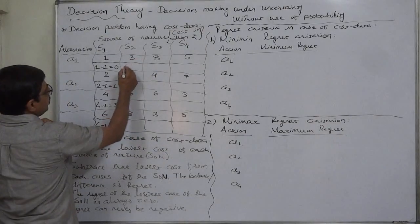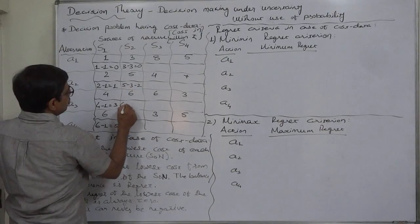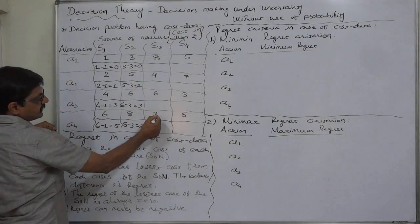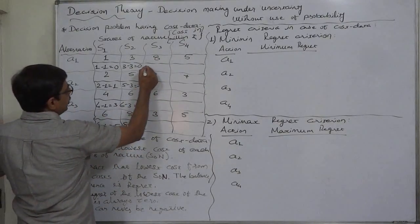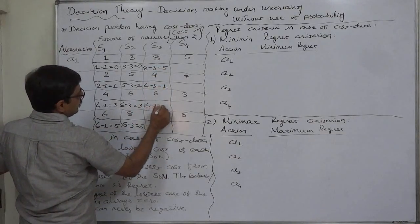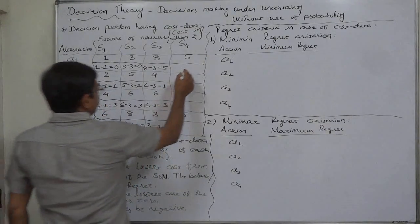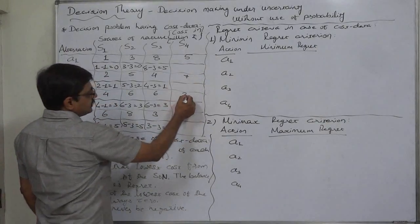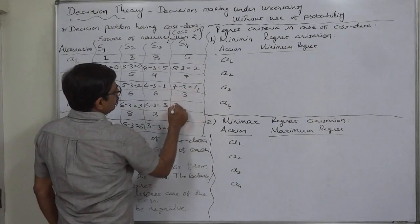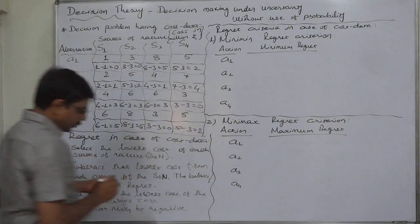For S2, the minimum is 3, so the regrets are: 3−3=0, 5−3=2, 6−3=3, 8−3=5. For S3, the lowest is 3, so: 8−3=5 (wait, 4−3=1), 6−3=3, 3−3=0. For S4, the lowest is 3, so: 5−3=2, 7−3=4, 3−3=0, 5−3=2. Now we have the regret values for all states of nature across all alternatives.